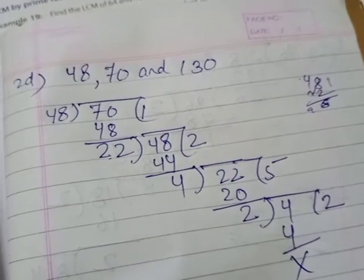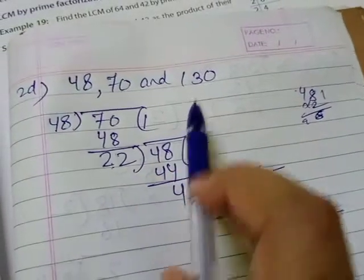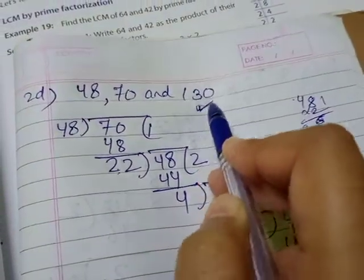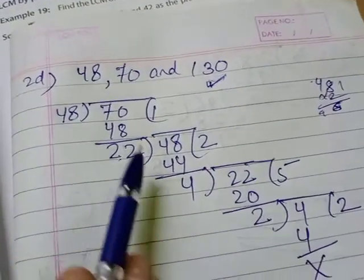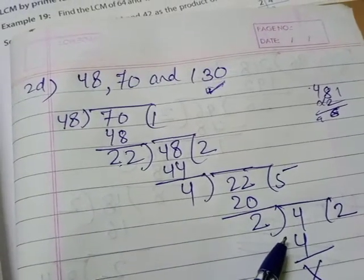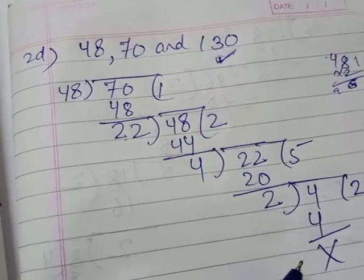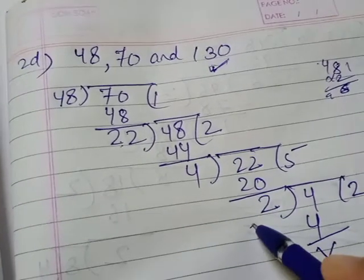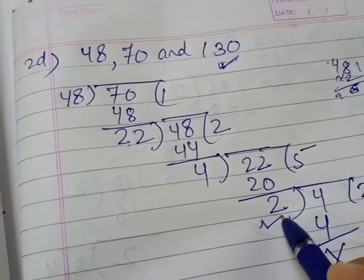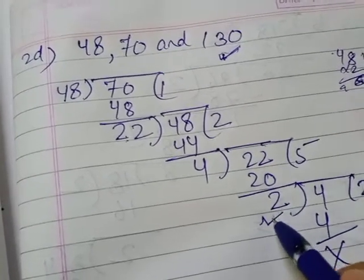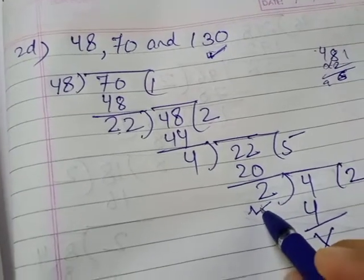Now we will come to this third number. In this first HCF, what is the last divisor? The last divisor, if you will see, is two. Now so from this last divisor, we have to solve the third number.